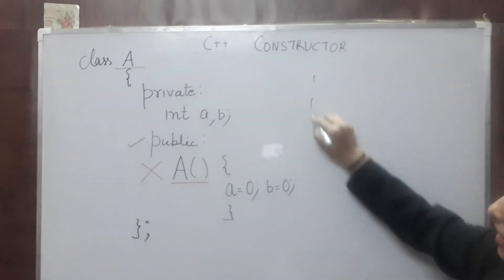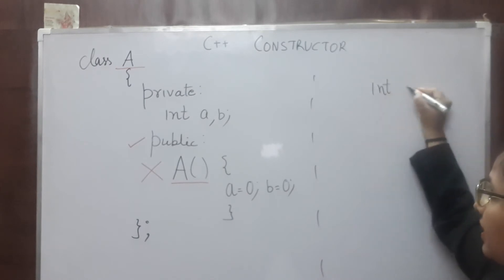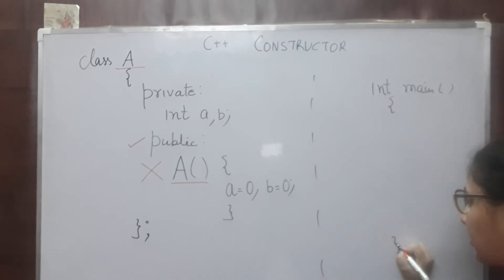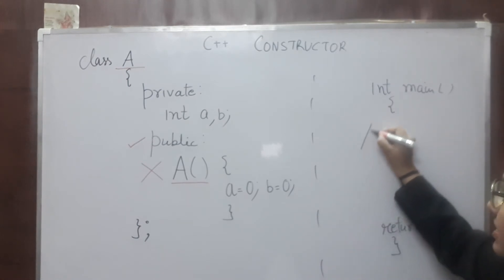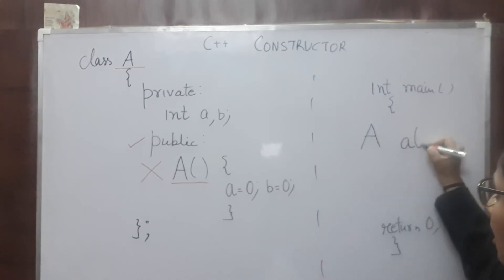And let's see in main function, int main, curly bracket opening, curly bracket closing, return 0. This is for this int. Next, I am writing a statement, caps A, that means this class, A object.